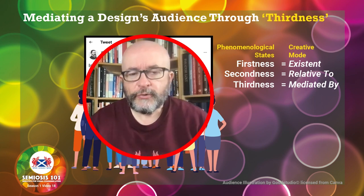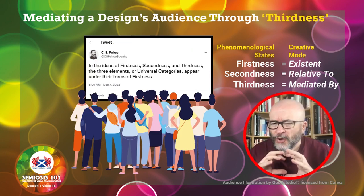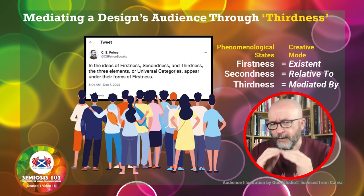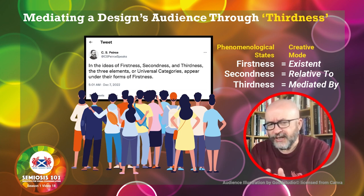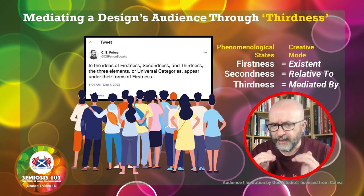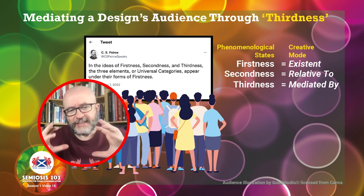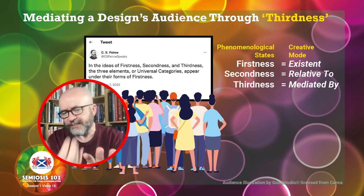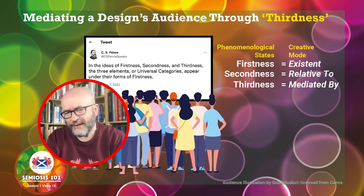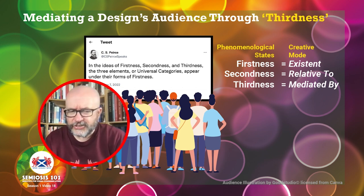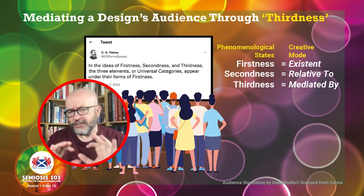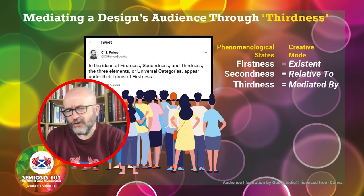We're finishing off the month on the phenomenological routes underpinning how Peirce's semiotic theory — the sign action of that theory — operates. The first week we talked about firstness, the week after that secondness, and now we're at the highest level which is thirdness. We're using CS Peirce's tweets as a way of getting Peirce's theory in front of us, so that from a designer-centric point of view Semiosis 101 can unpack Peirce's complex language into what is really useful for designers and illustrators.